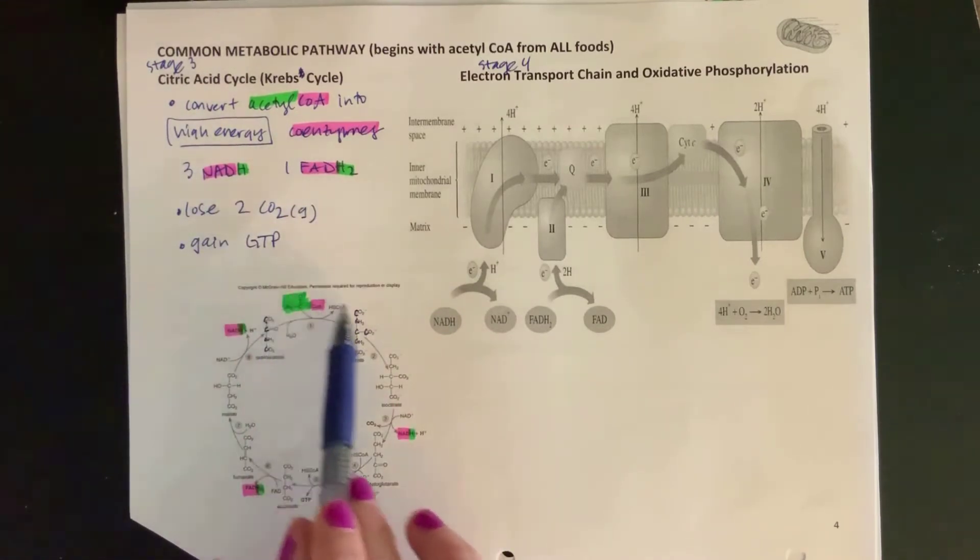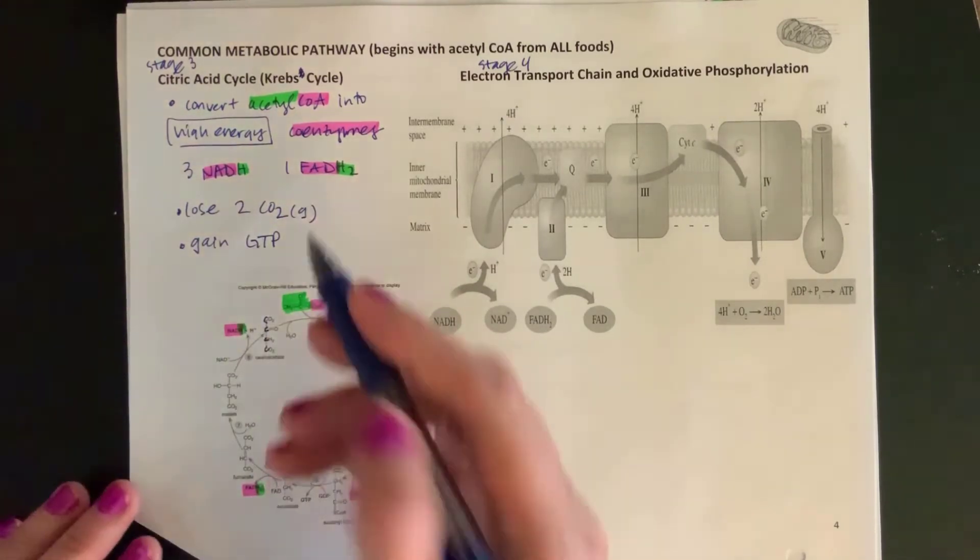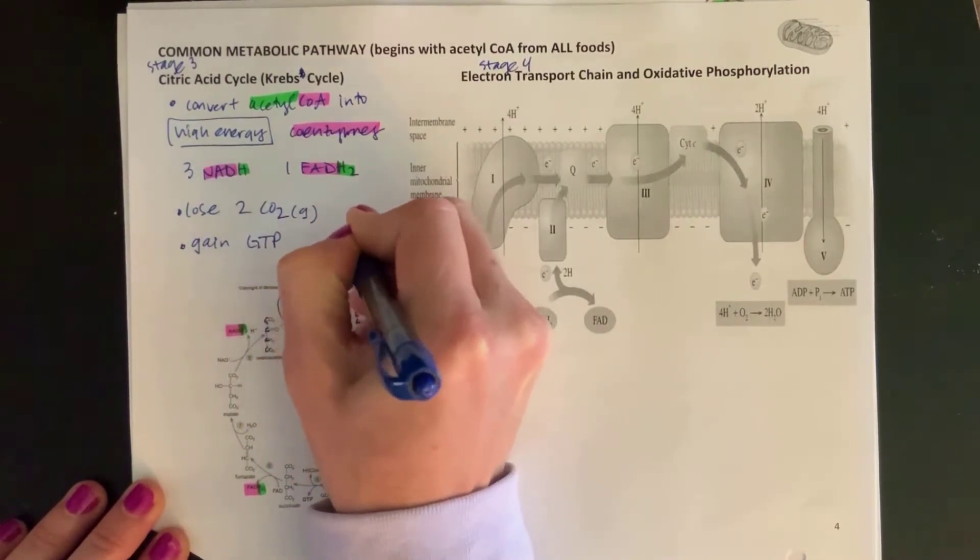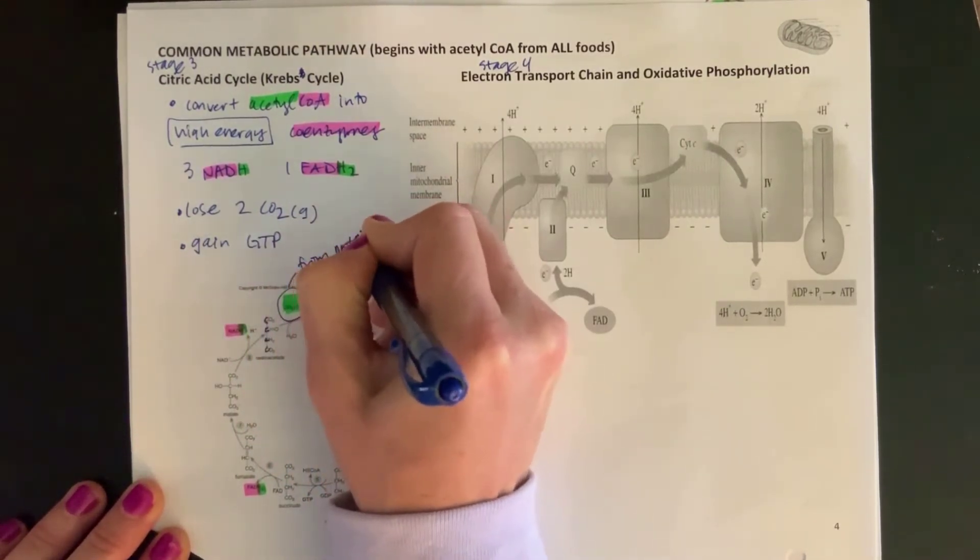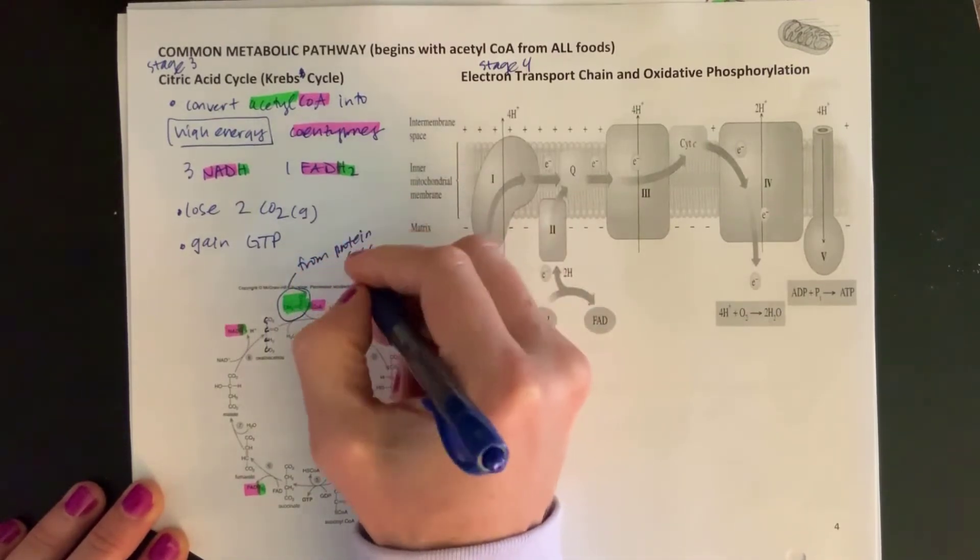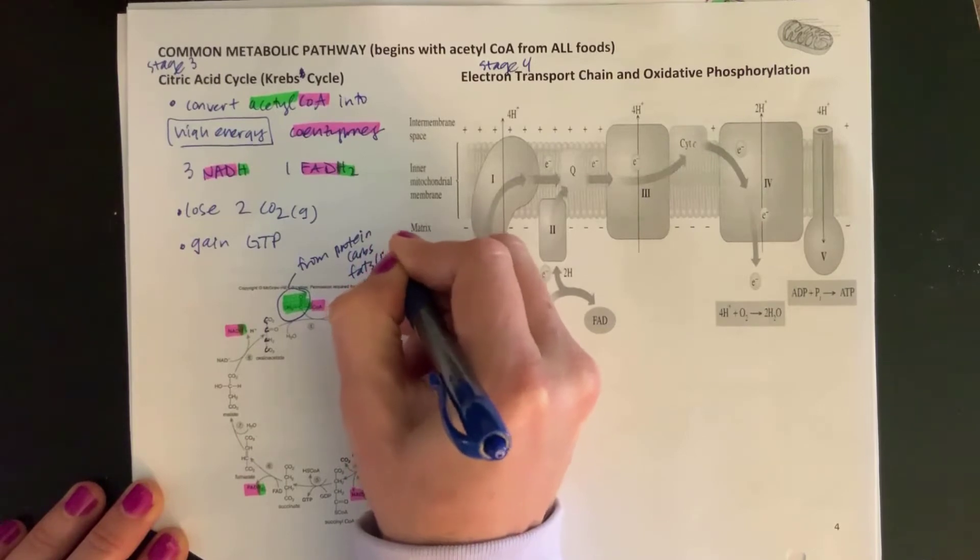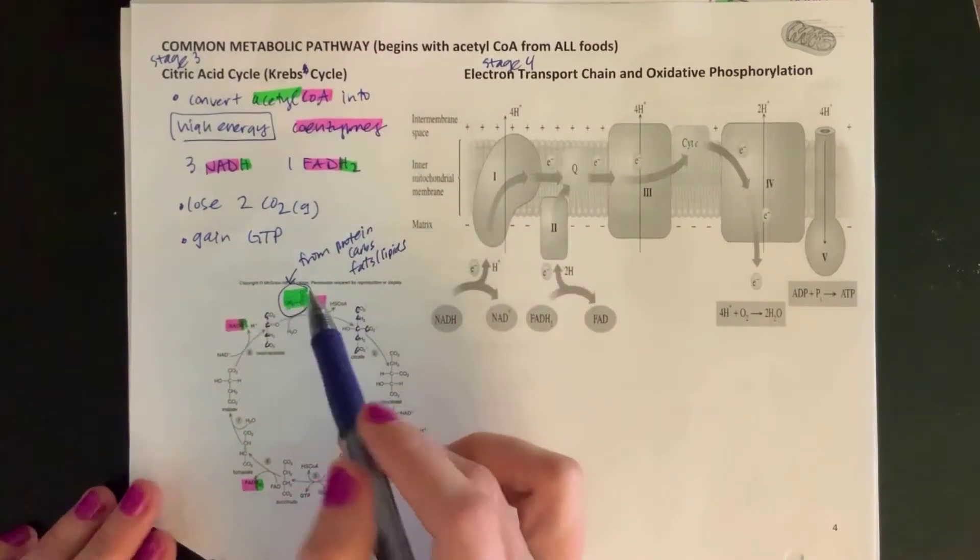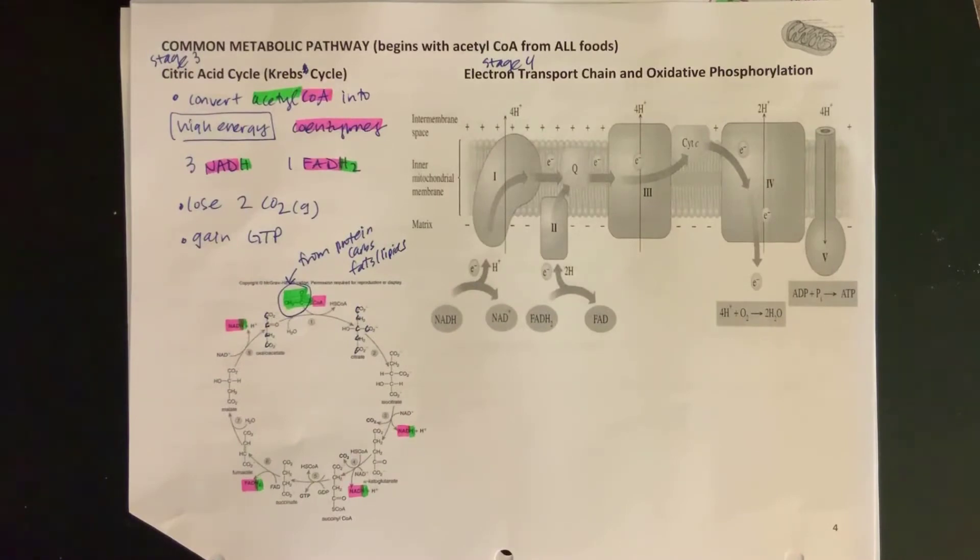One acetyl comes in and gives me that much. This acetyl could originally be from protein, it could be from carbs—it's where the bulk of our energy comes from—but it also could be from fats or lipids. So any of those can get metabolized until eventually you have just this kind of standard two-carbon acetyl group here.